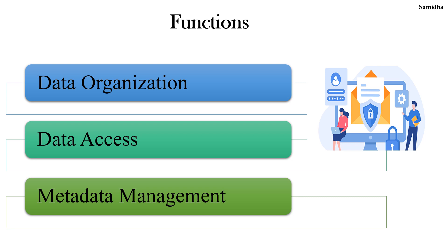Next is data access — it provides different ways to read, write and modify the files, and also manages who has the permission to access those files. Next is metadata management. Metadata is basically like an ID card for a file, which provides details like file name, when that file was created, modified or accessed.